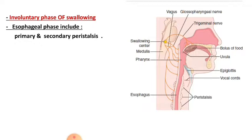The esophageal stage of swallowing includes primary and secondary peristalsis. In primary peristalsis, there is a normal peristaltic wave which is a continuation of the peristaltic wave started in the pharynx, and the contents of the esophagus descend down to the stomach.